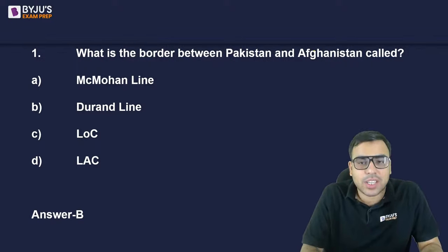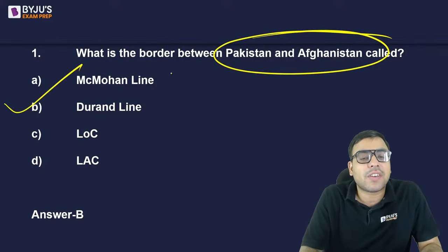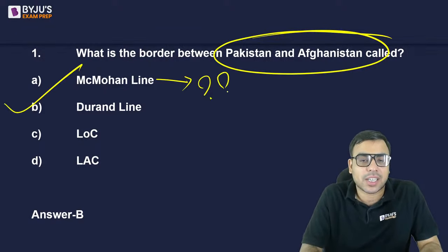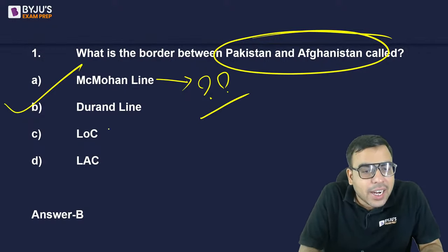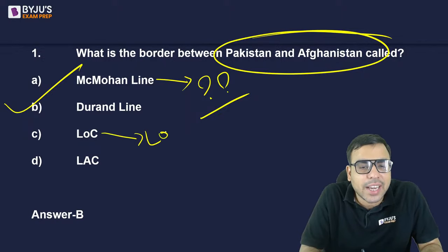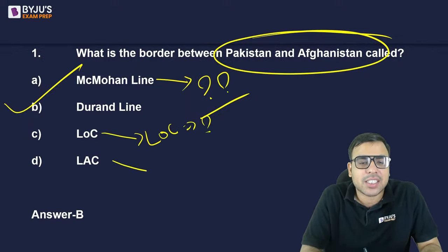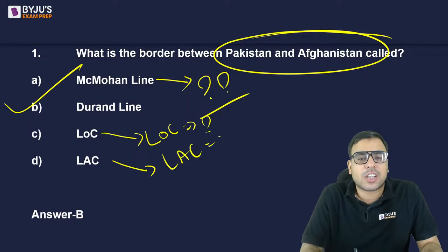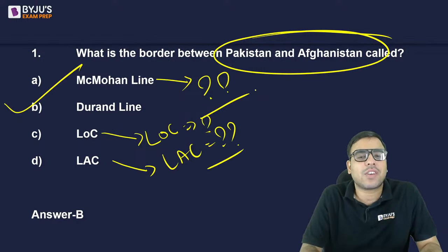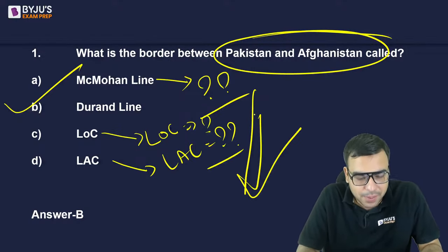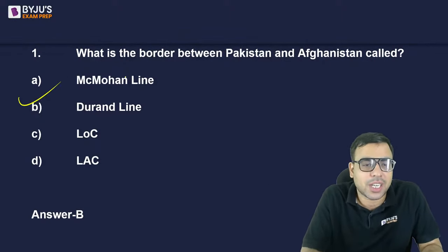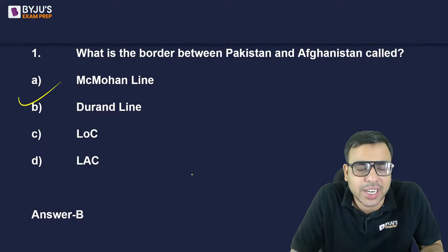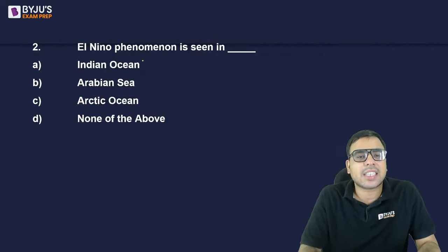As homework, go and find out where the McMahon Line is — the border between which two nations. Also find out where the Line of Control (LOC) and the Line of Actual Control (LAC) are. After the class, write the answers in the comment section.